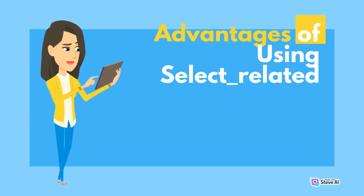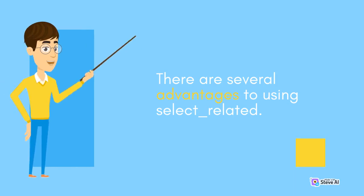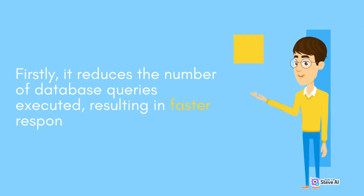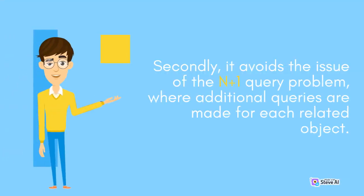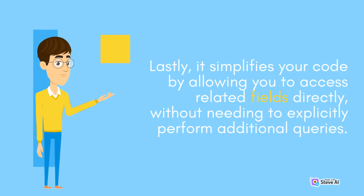There are several advantages to using select_related. Firstly, it reduces the number of database queries executed, resulting in faster response times. Secondly, it avoids the issue of the N+1 query problem, where additional queries are made for each related object. Lastly, it simplifies your code by allowing you to access related fields directly, without needing to explicitly perform additional queries.